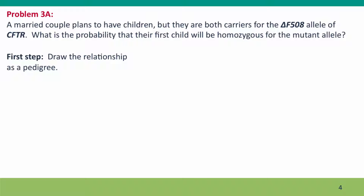Here's our problem. A married couple plans to have children, but they're both carriers for the allele of the CFTR gene that causes cystic fibrosis. Both parents have one defective allele of this gene, and they're concerned that their first child could be homozygous for this very harmful mutation. They want to know what the probability is that their child will be homozygous.